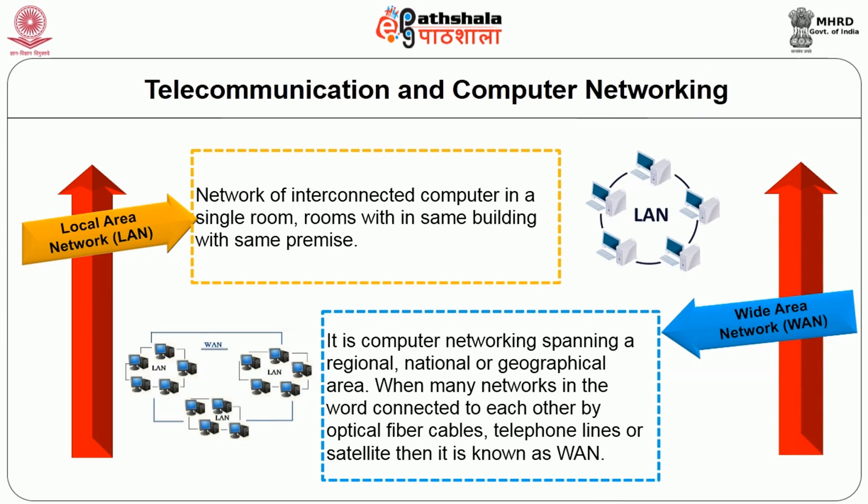When many networks in the world are connected to each other by optical fiber cables, telephone lines, or satellites, then it is known as a WAN. The internet is the ultimate system of WAN because it connects many thousands of computers and LANs around the world.